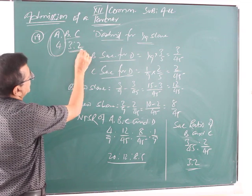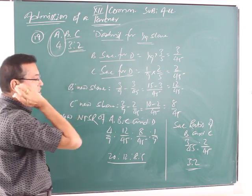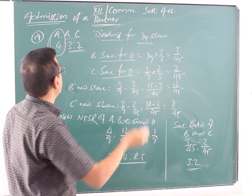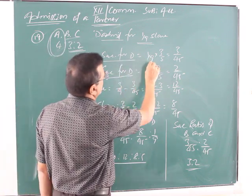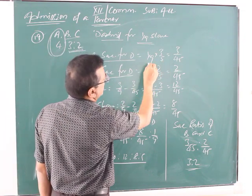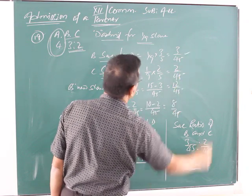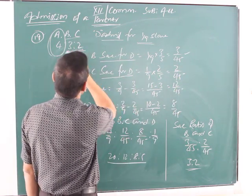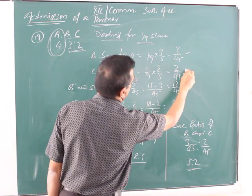B and C will sacrifice in the ratio 3:2, because A has not contributed anything to the interest of the new partner D. So, B sacrificed 3/5 of 1/9, which equals 3/45. C sacrificed for D, 2/5 of 1/9, which equals 2/45.